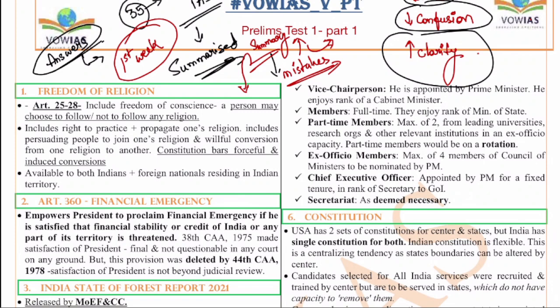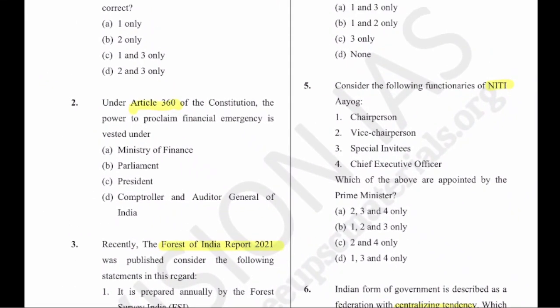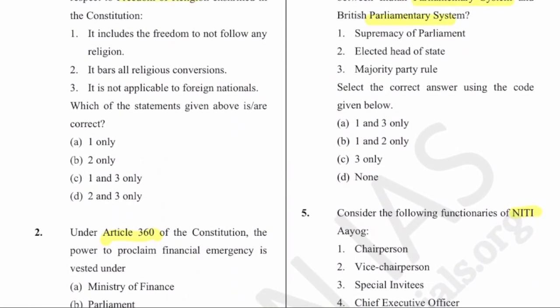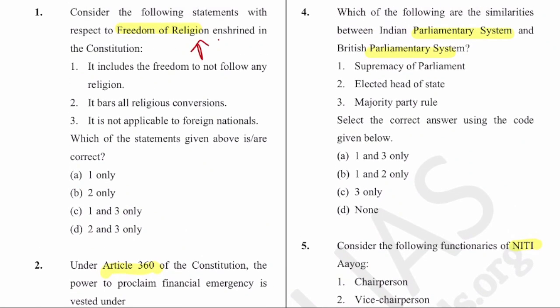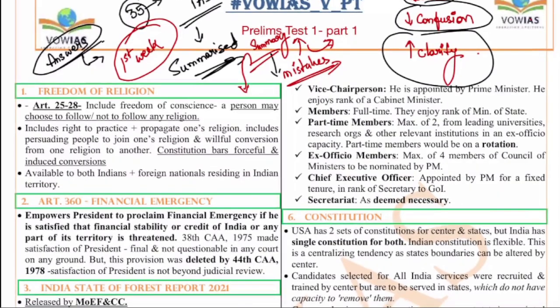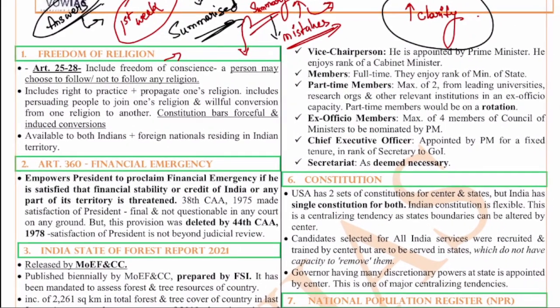Now let's begin with the first question. The first question is with regard to the freedom of religion. Freedom of religion is very important this year for the exam. Why is it important? Because in the last one year, religion has been in the news - maybe because of the hijab issue, the Ram Mandir issue and all. Whenever things are an issue, UPSC has a tendency to ask questions from it. So freedom of religion is very important for us.